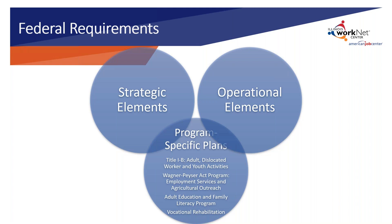There are also operational elements, though we won't cover those in depth today. Operational elements are being developed now and will identify the state's efforts to support the strategic vision and goals. This section ensures the state has the necessary infrastructure, policies, and activities to meet its strategic goals, implement strategy, and support program development and coordination. Program-specific plans required from WIOA's four core partners are also currently being developed: Title I-B, Wagner-Peyser Act Program, Adult Education and Family Literacy, and Vocational Rehabilitation Title IV.